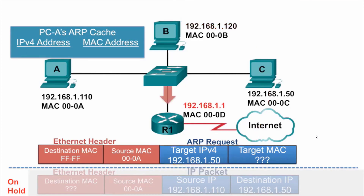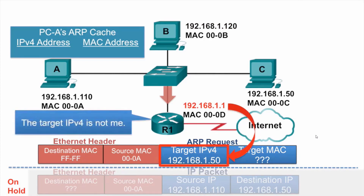Router R1 also receives this ARP request. Its ARP process examines its own IPv4 address and compares that against the target IPv4 address, and also realizes this is not its IPv4 address, so it does not need to send the ARP reply. By the way, routers will not forward ARP requests out other ports.